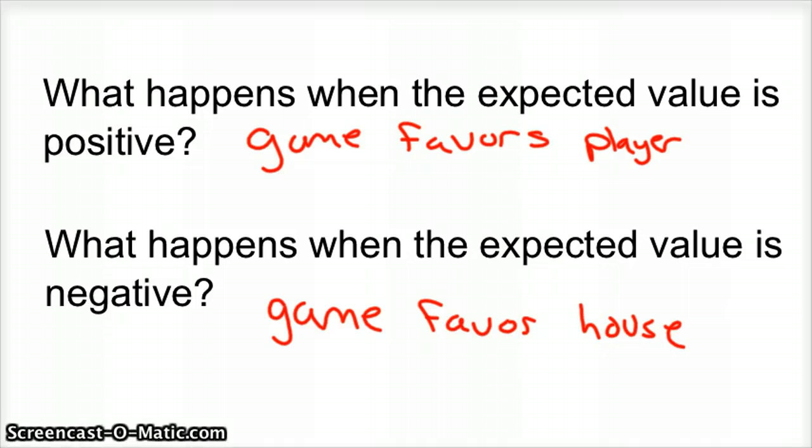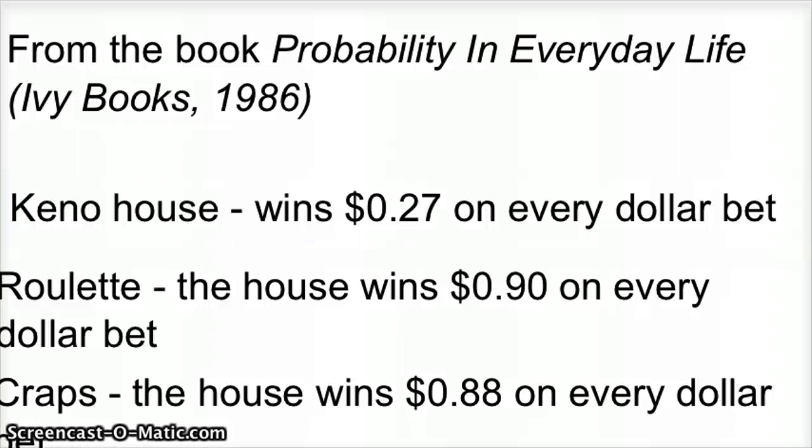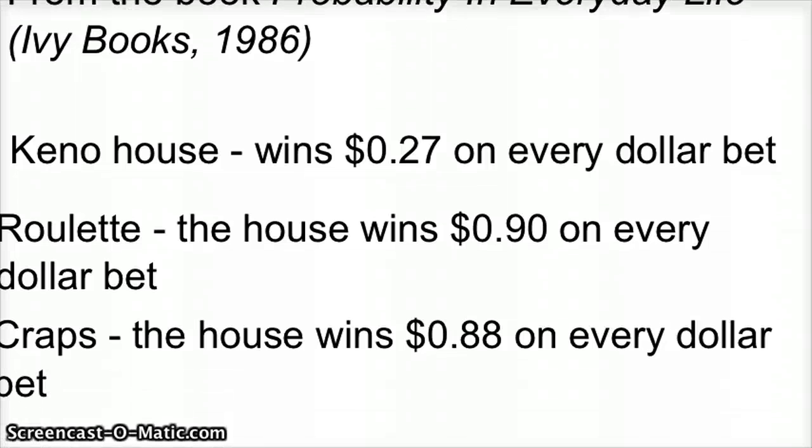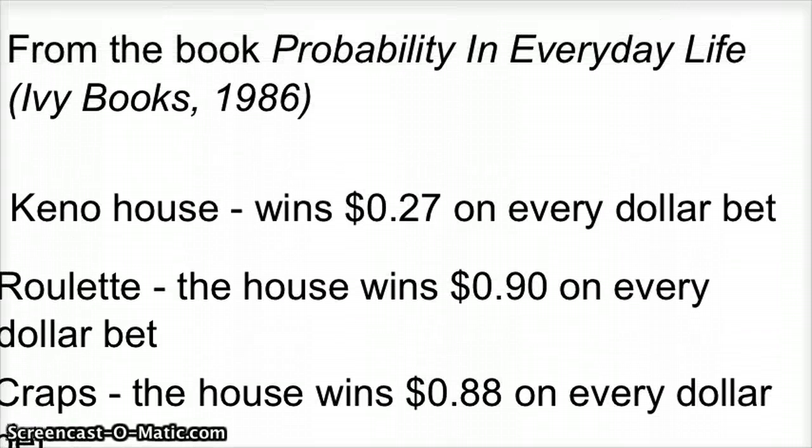You see these in fairs all the time. The really fun one I've always thought about is the tossing the coin, tossing coins or tossing hoops into, onto bottles. So now you can actually calculate your expected value using area formulas, which is pretty cool. Based on, here's just some statistics to tell you not to go out and gamble. From the book, Probability in Everyday Life, Ivy Books, 1986.